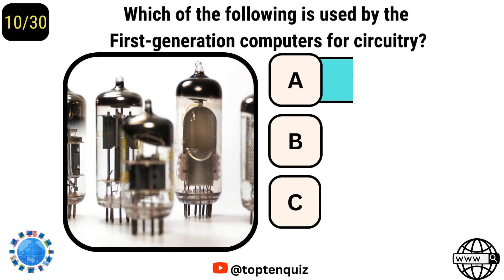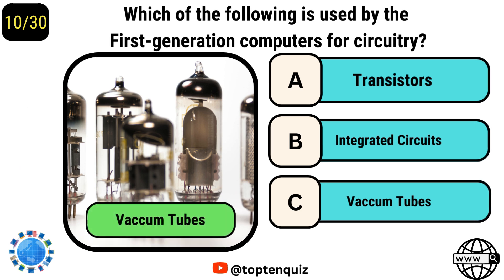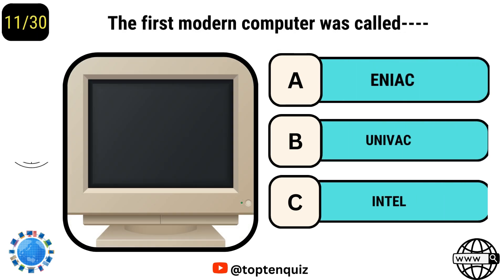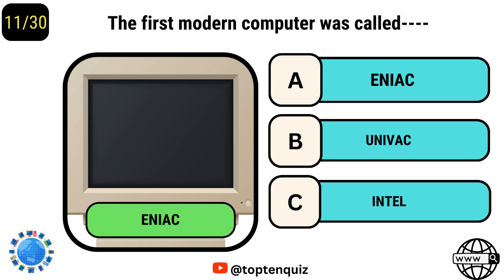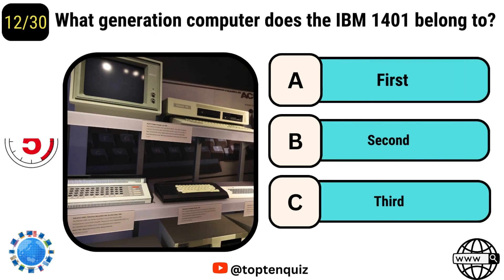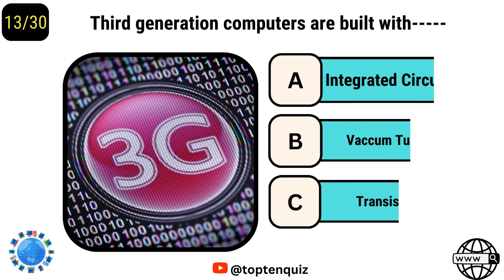Which of the following is used by the first generation computers for circuitry? Vacuum tubes. The first modern computer was called ENIAC. What generation computer does the IBM 1401 belong to? Second.